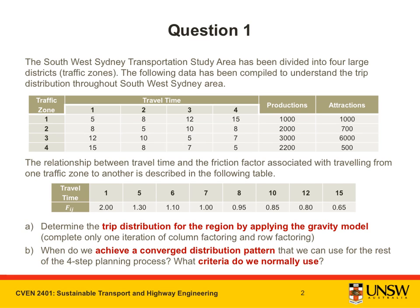Part A: determine the trip distribution for the region by applying the gravity model. Complete only one iteration of column factoring and row factoring. Part B: when do we achieve a converged distribution pattern that we can use for the rest of the four-step planning process? What criteria do we normally use?